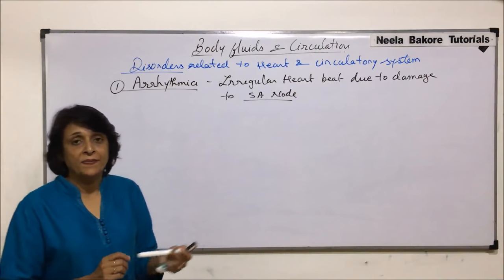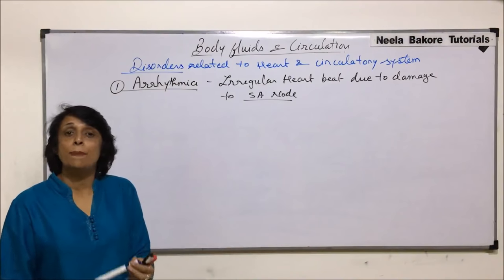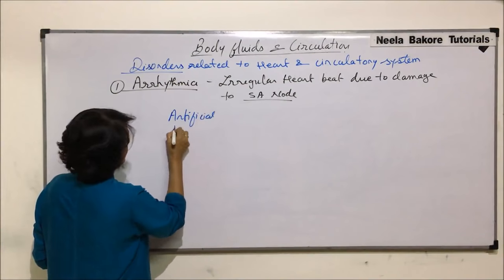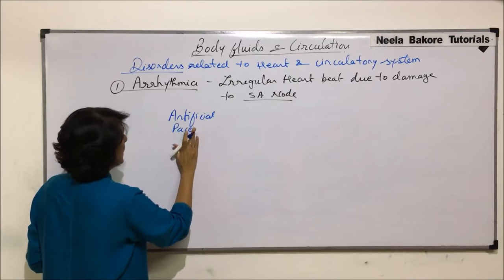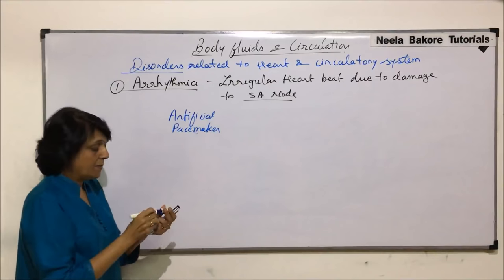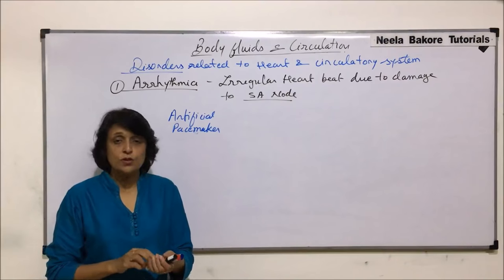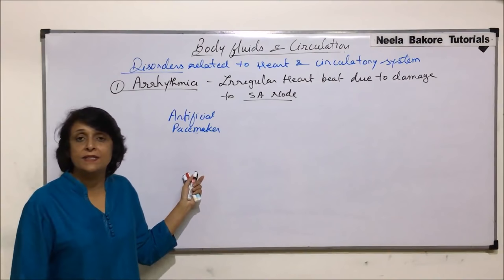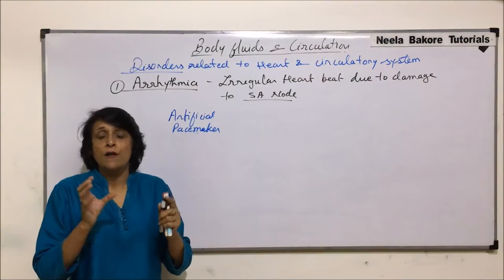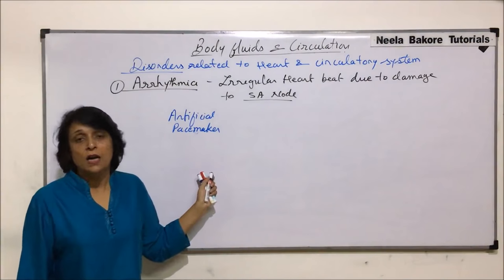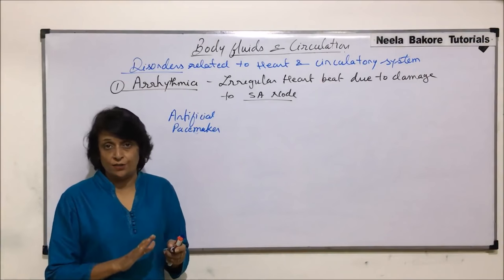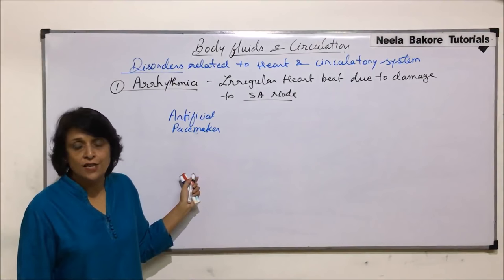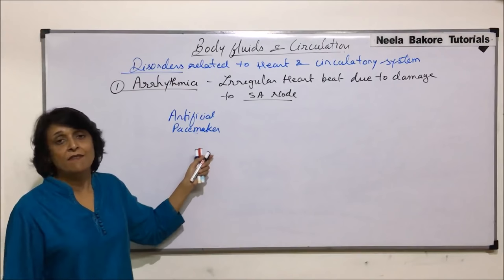How do we treat it? The treatment is by implanting an artificial pacemaker. The modern artificial pacemakers used these days have lithium halide batteries. The reason lithium halide batteries are used is because of their longevity — they have a life of about 10 years. So once this pacemaker is implanted, it will be good for at least 10 years, and only after that would it need to be replaced.